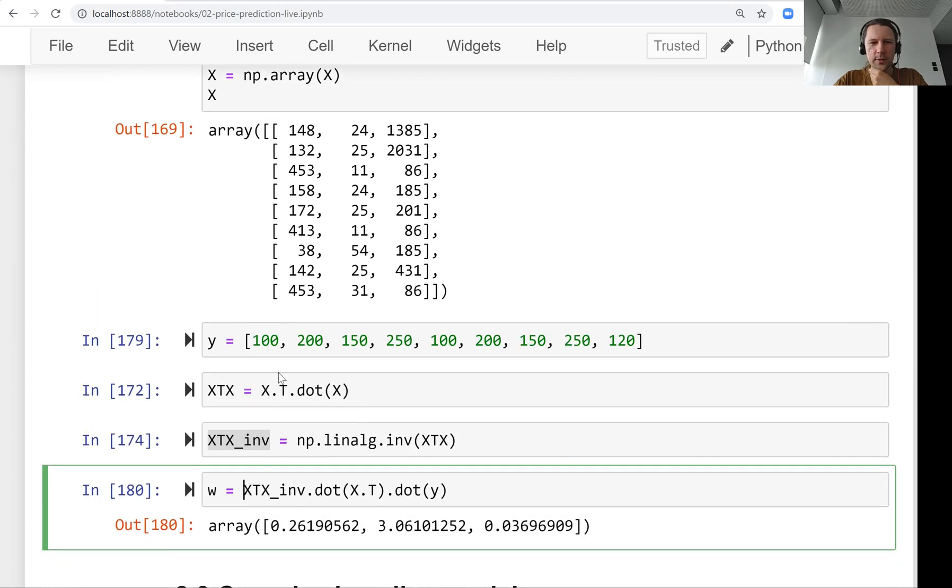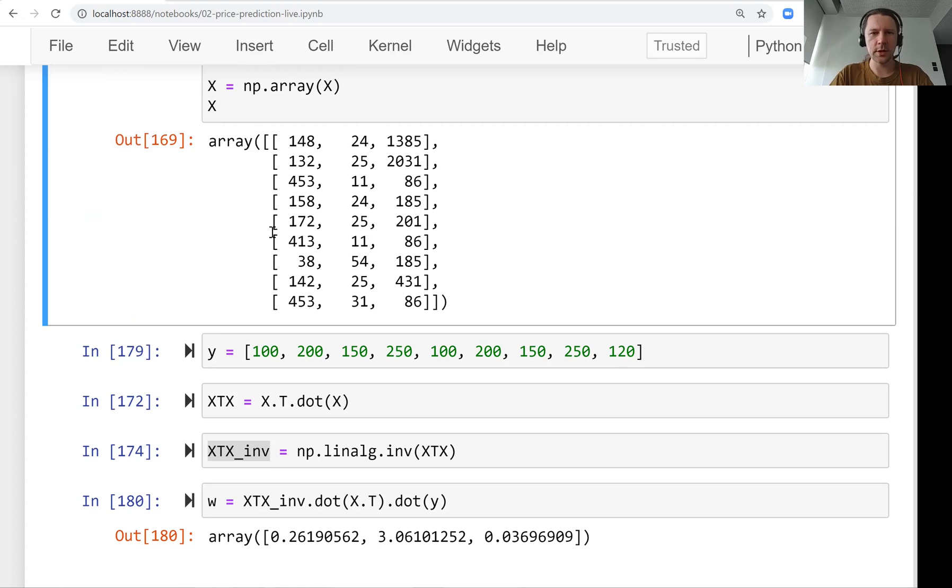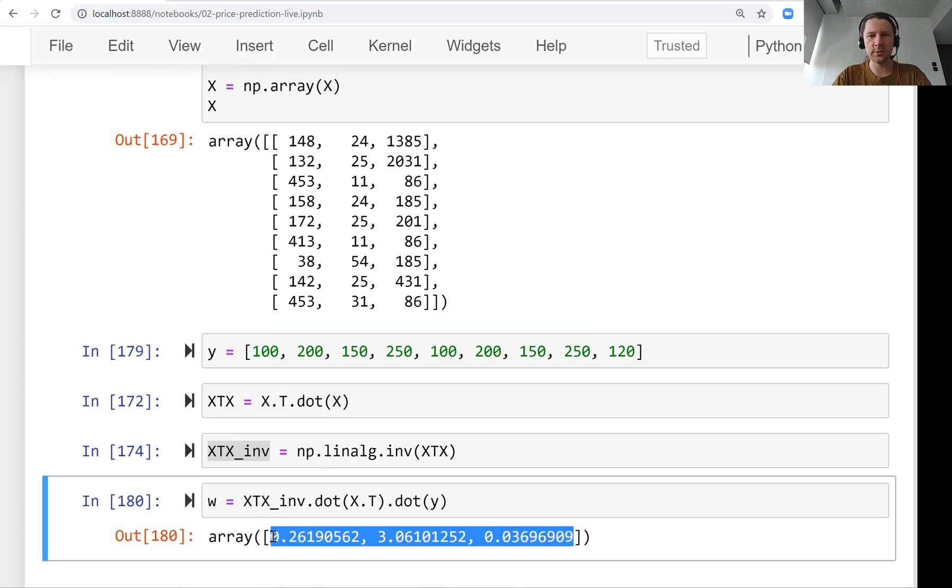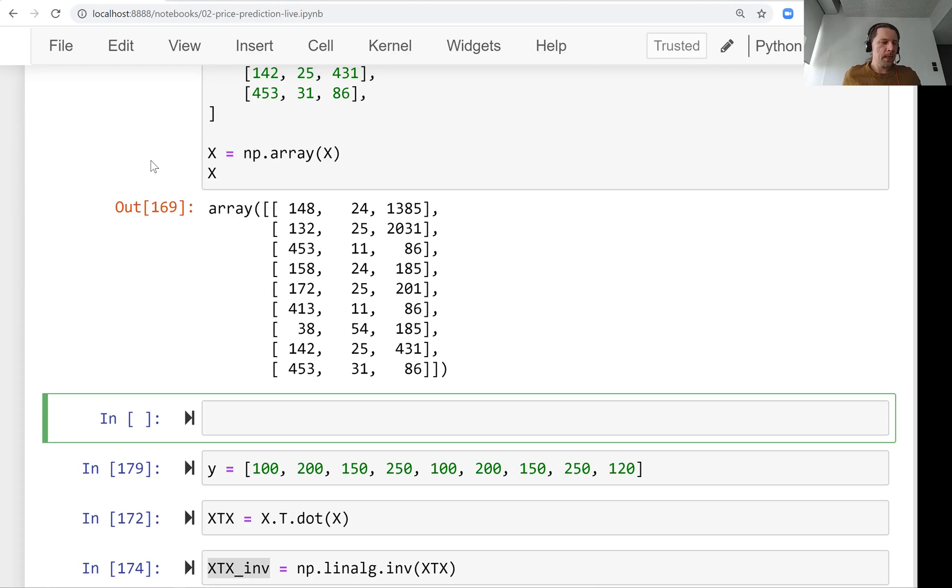And we forgot about one thing. So we forgot about this bias term, right? So what I just did, because I forgot to add ones here, basically we trained the model, but we didn't train the bias term. Sometimes these models like that make sense. But we want to include the bias term, because as we talked previously, this bias term gives us the baseline. So this is how much a car should cost if we don't know anything about this car. And in case we don't include the bias term, then we don't know what should we base our prediction on.